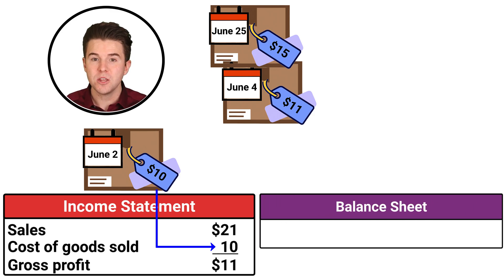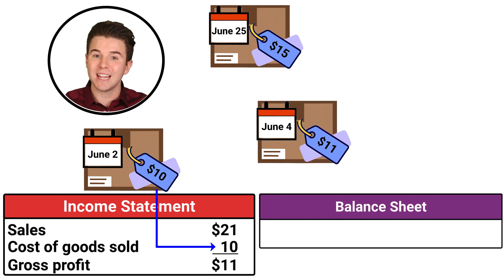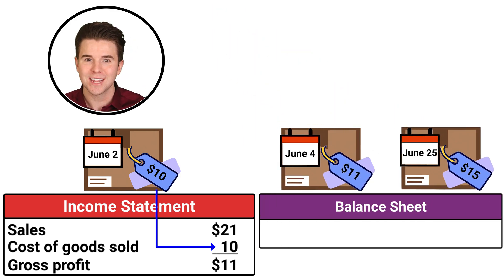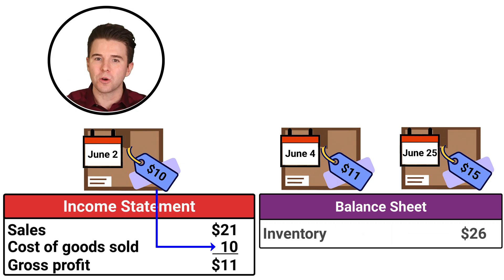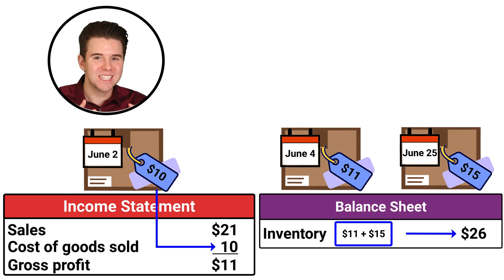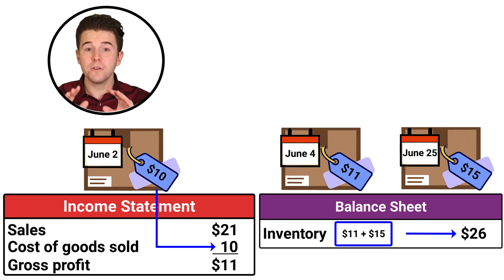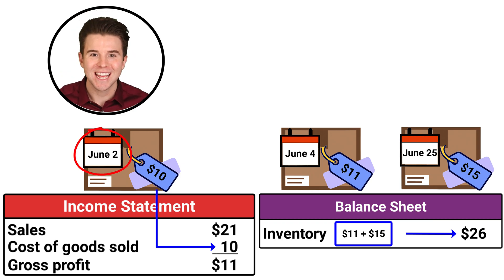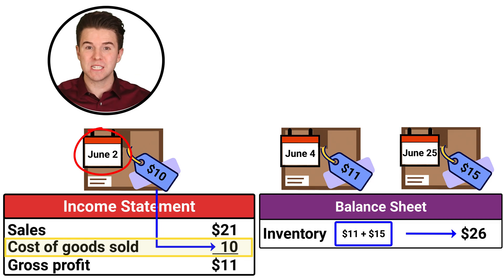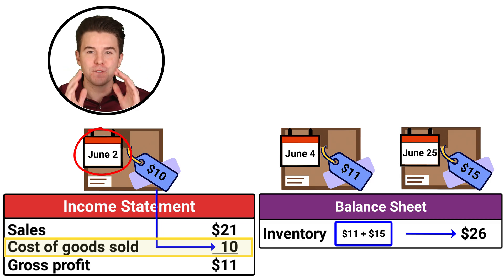The other two remaining units for $11 and $15 get reported in inventory on the balance sheet. As you can see, under FIFO, the earliest unit purchased is sent to cost of goods sold on the income statement first.